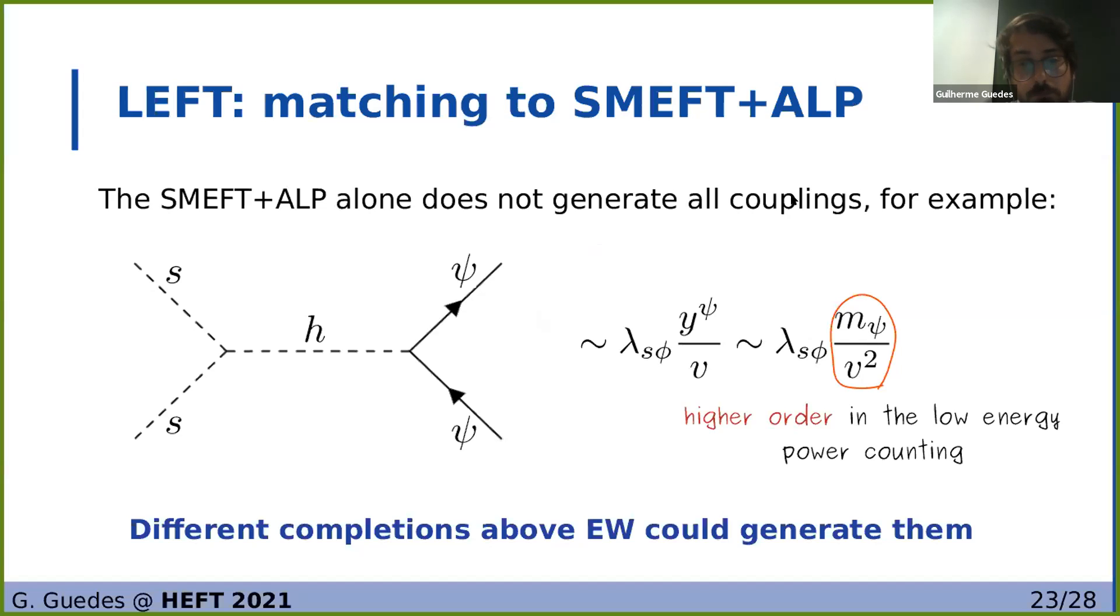Here we also have that the coupling to gauge bosons no longer runs only proportional to itself due to the presence of the dipole operators. We also have here some part that is proportional to the number of fermions in the theory, and this is a result of integrating out the fermions as we go down in energy.